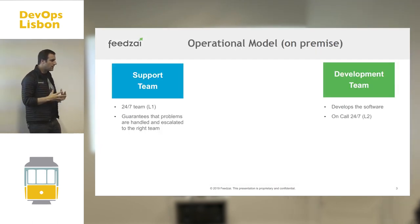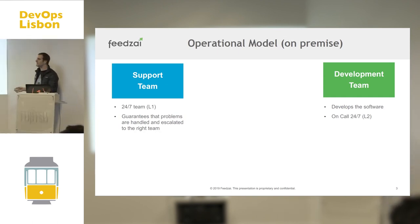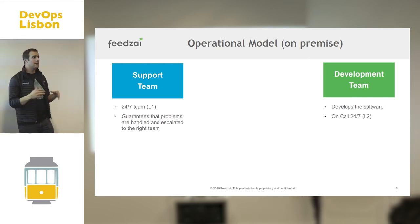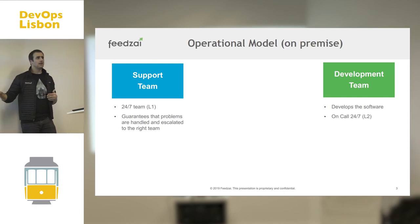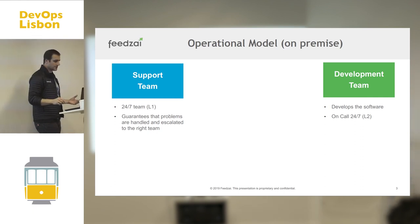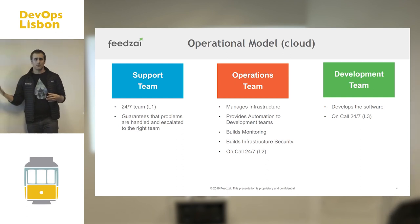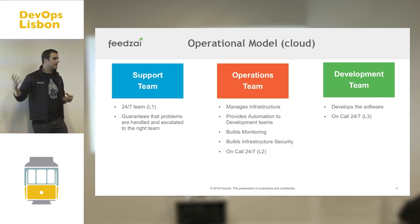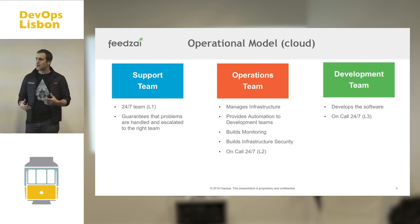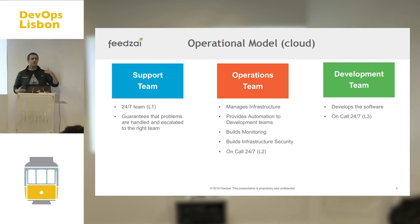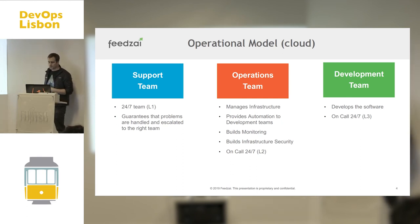Previously on-premise, we had our 24/7 L1 team that guaranteed problems were escalated to our teams, and then directly to our development team — the L2 team — which was on-call and worked with customers to solve problems. Now with the cloud-based model, we have an extra operations team that manages infrastructure, provides automation, builds monitoring and infrastructure, and is also the first level of support before escalating to developers.